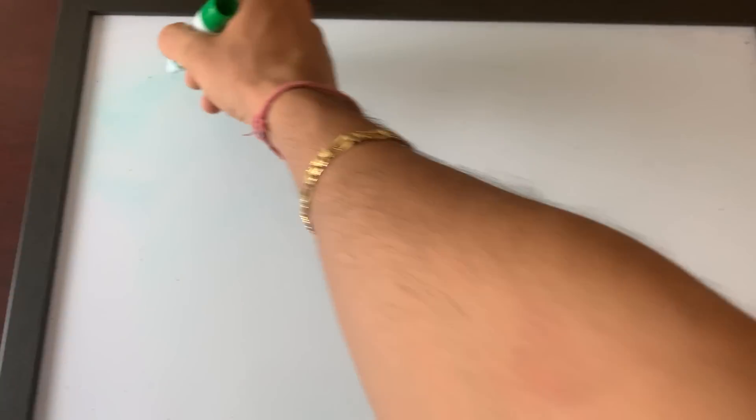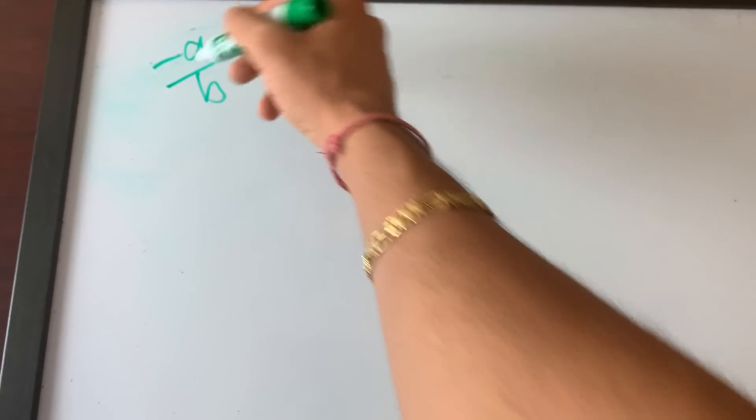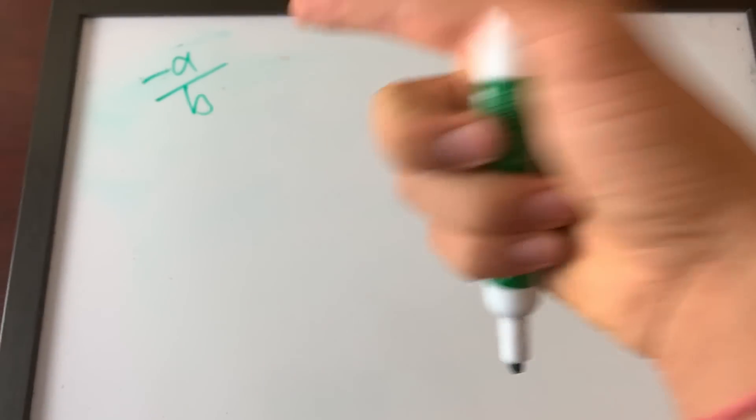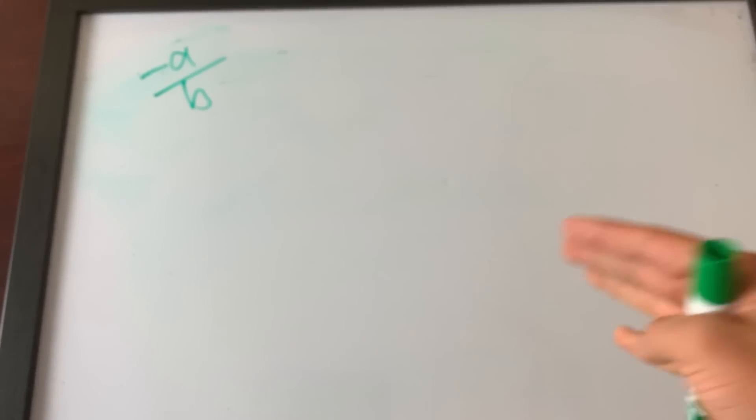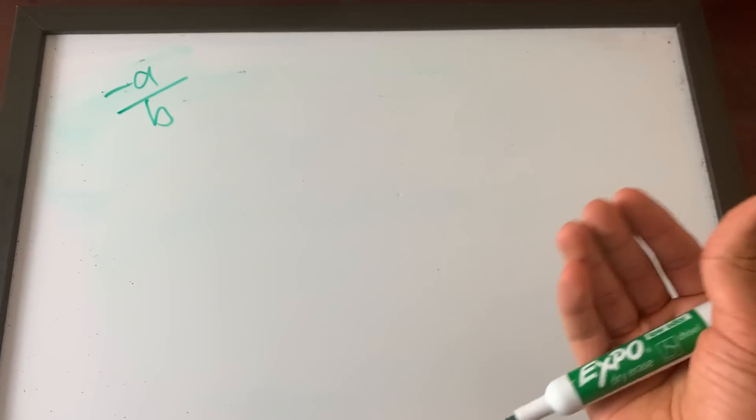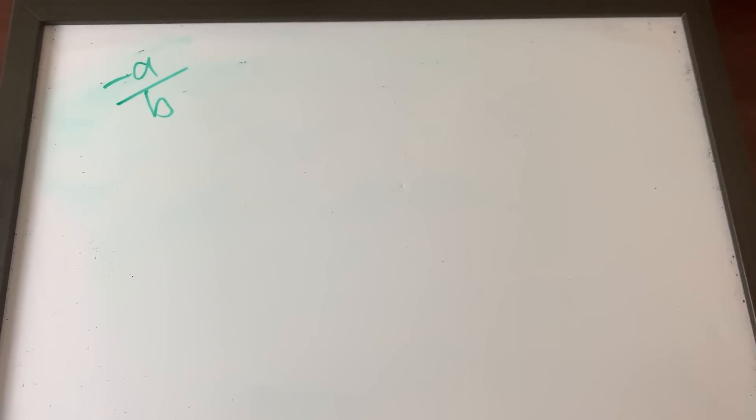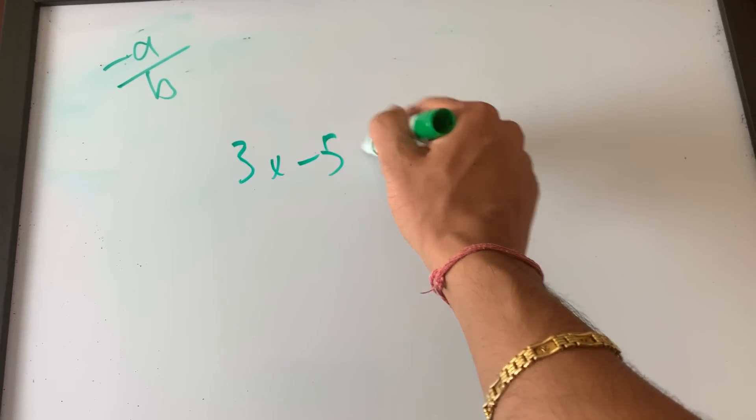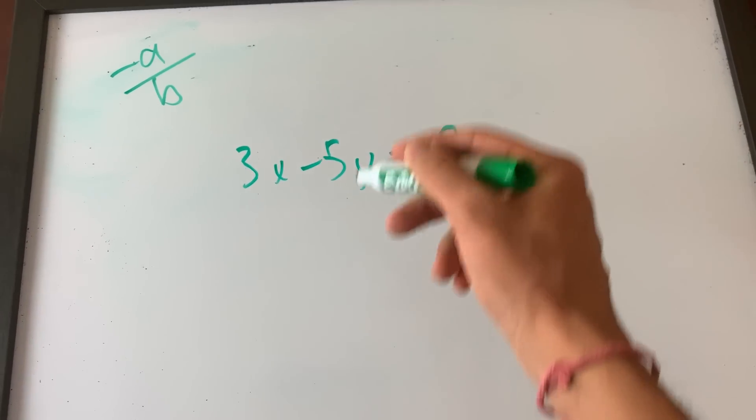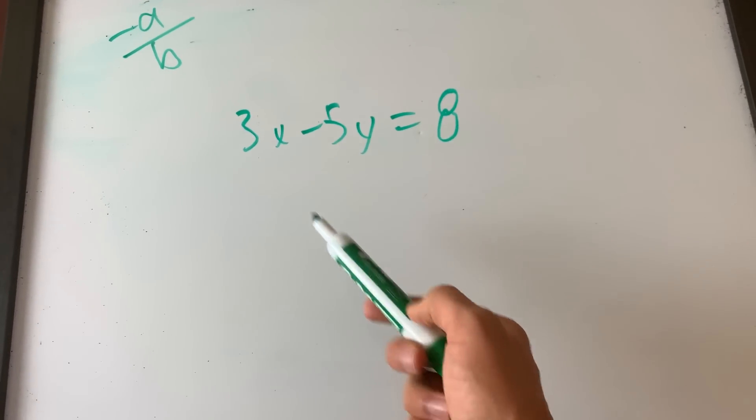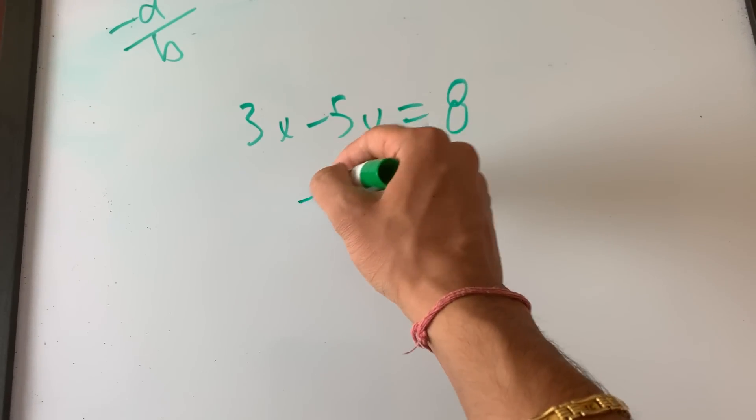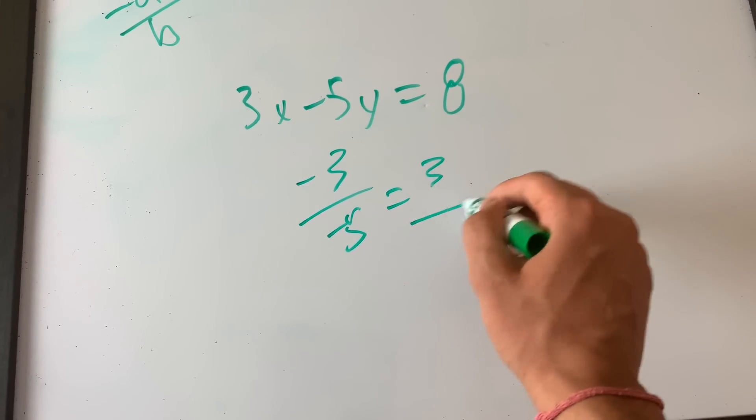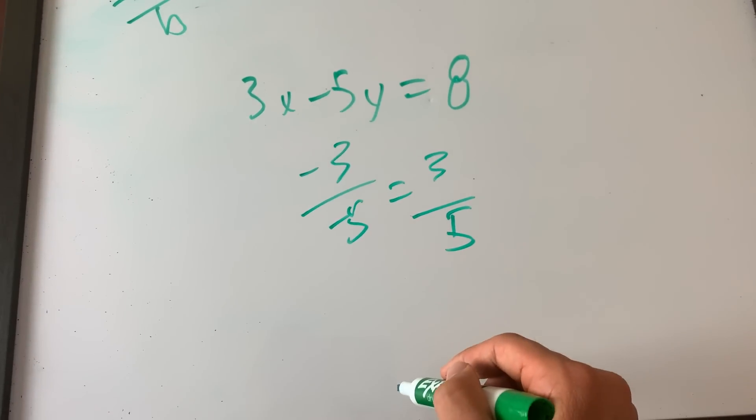The first thing you guys need to remember is negative a over b. Try to pause the video and try to remember exactly what this trick is supposed to do. If you have 3x minus 5y equals 8 and you're trying to find the slope, what you could do is negative a over b. So negative 3 over negative 5 equals 3 over 5. That is the slope in this case.